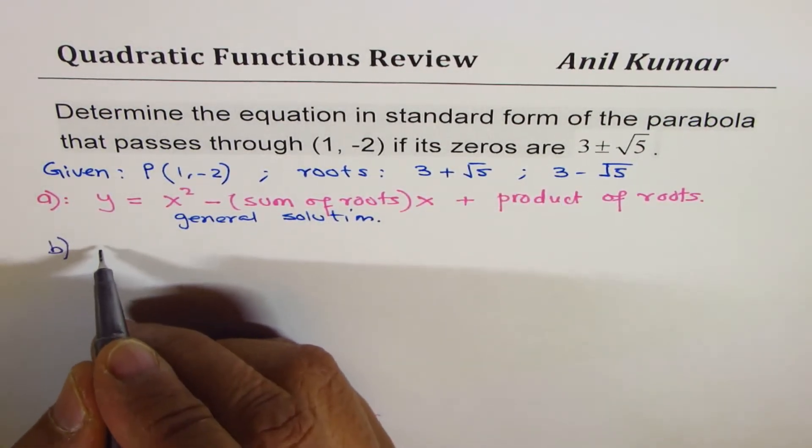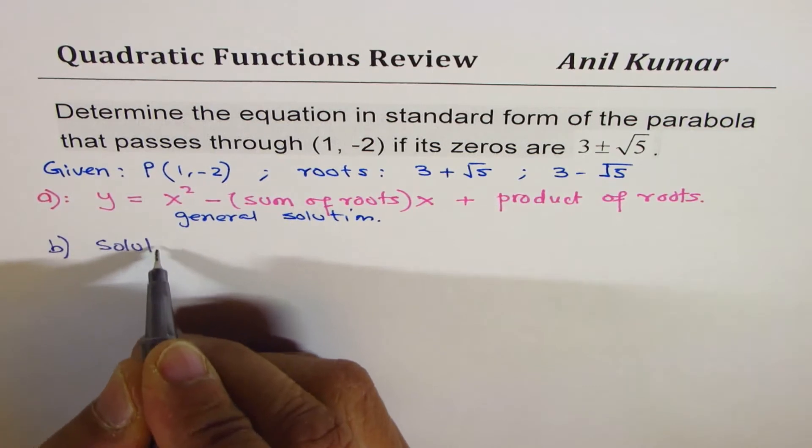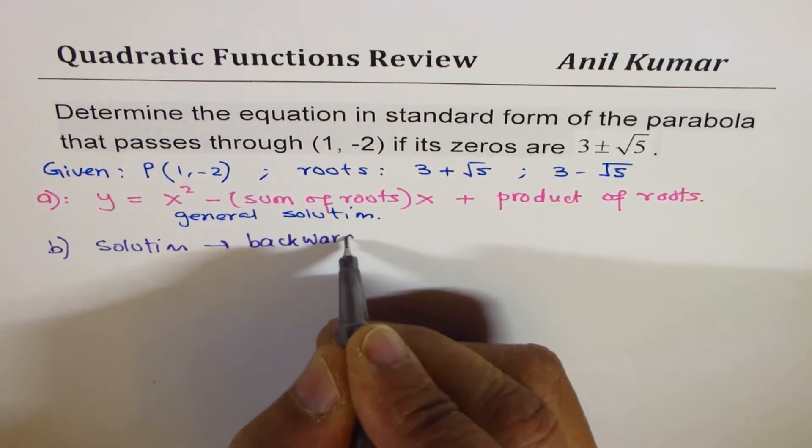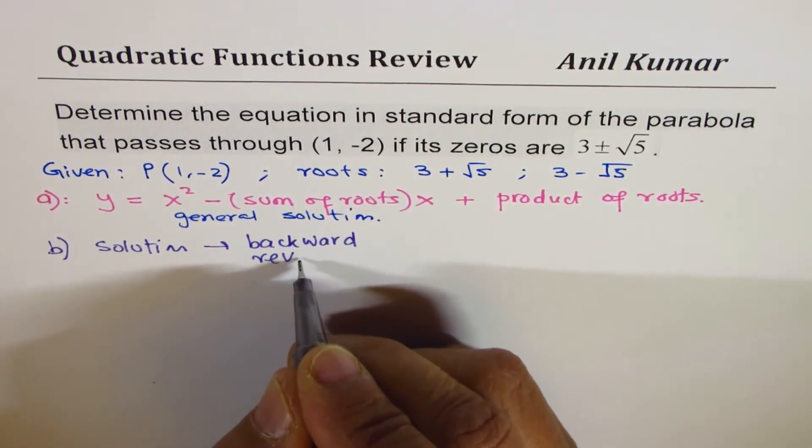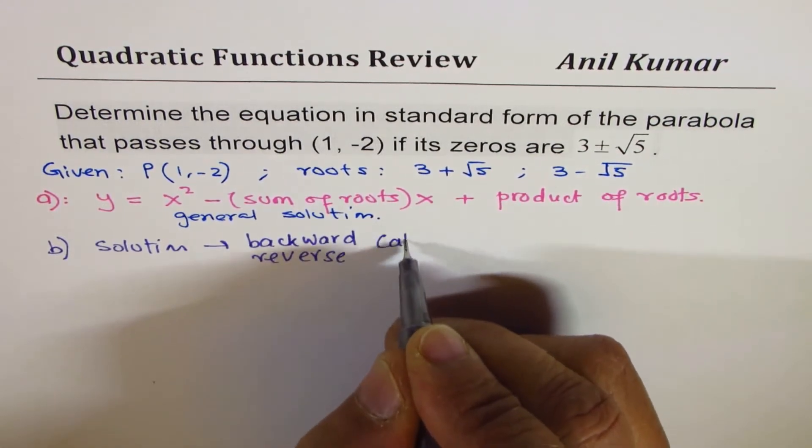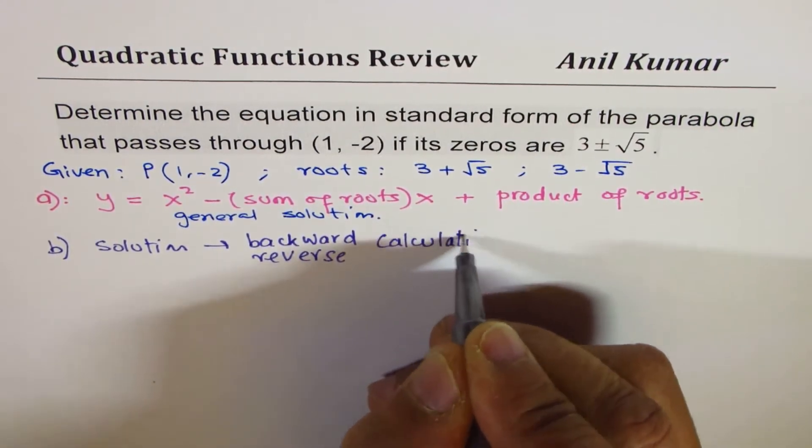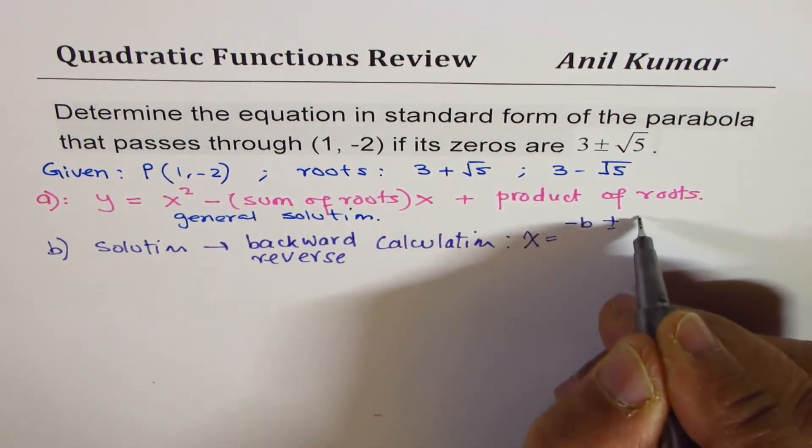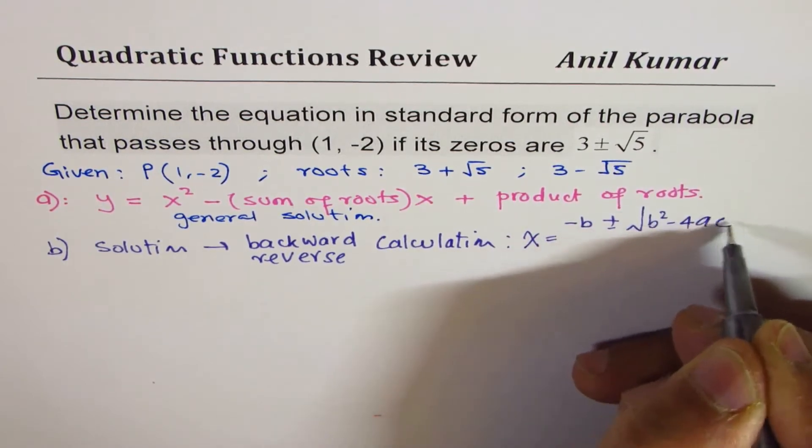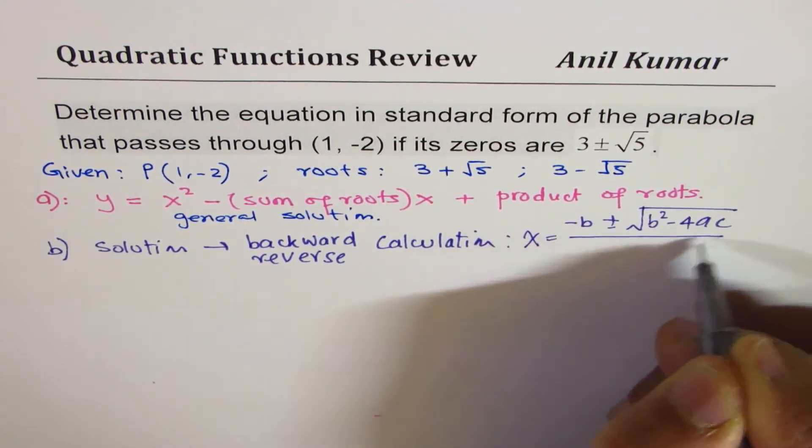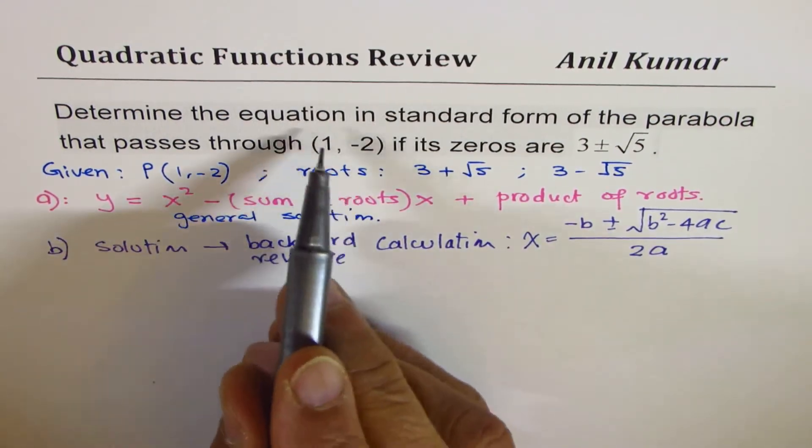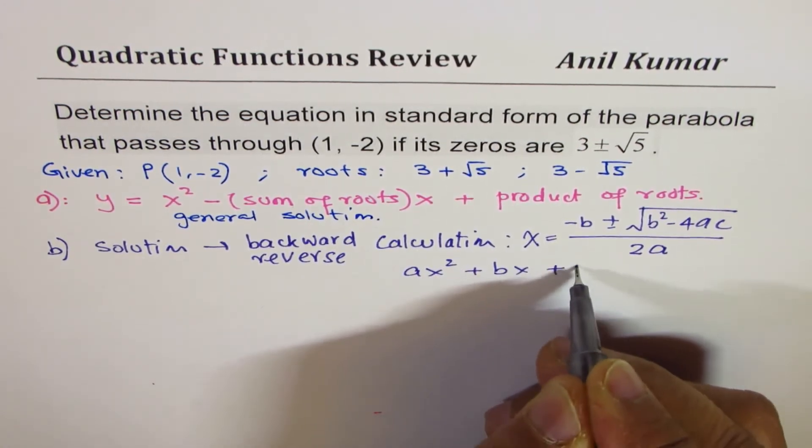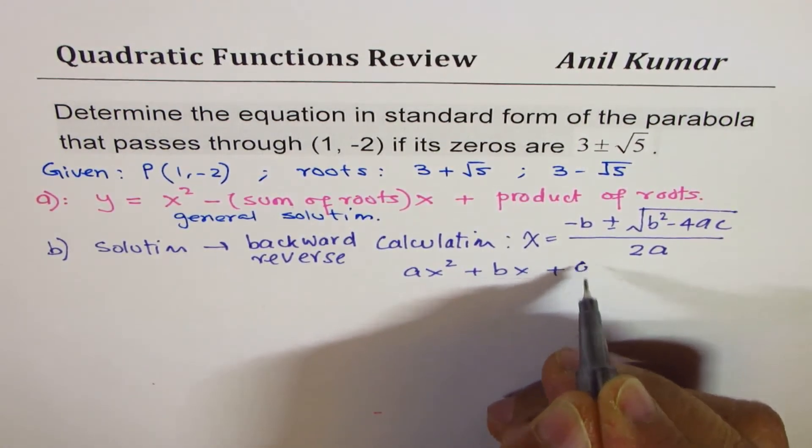The other method is to use the roots themselves, a solution that involves backward calculation or reverse calculation. Since you know that x = (-b ± √(b² - 4ac)) / 2a...